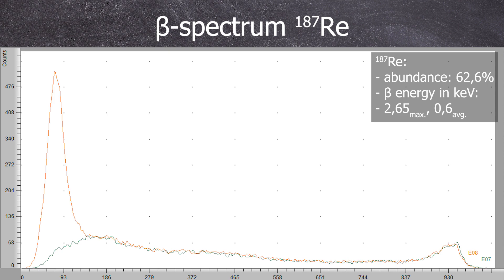But what shocked me the most is the isotopic abundance of 62.6%, meaning that more than half of all naturally occurring rhenium atoms are radioactive.